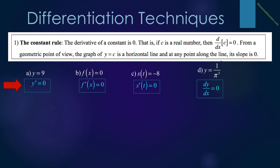So in part a, if y equals 9, then y prime equals zero. In b, if f of x equals zero, then f prime of x also equals zero. In c, if s of t equals negative 8, then s prime of t also equals zero. In d, y equals 1 over pi cubed. Since pi is a constant, 1 over pi cubed is a constant, and therefore dy/dx — note the different notation — equals zero as well.